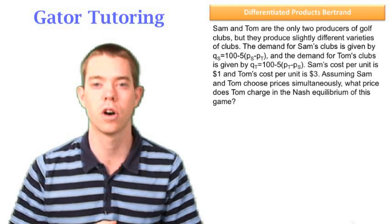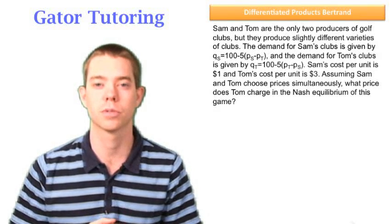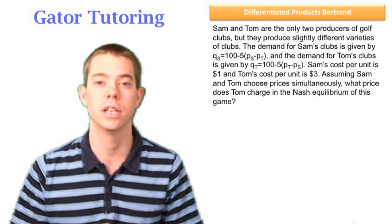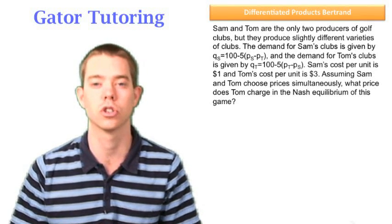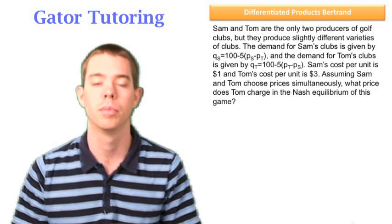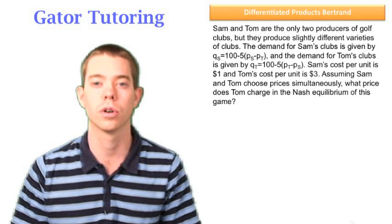We're going to solve this a lot like the homogeneous product oligopoly questions. We're going to start with the profit function, find each player's reaction function, and use substitution to solve for PS and PT. But notice now, when we're talking about differentiated products, we're picking our price. So price is our variable.